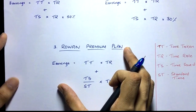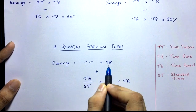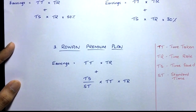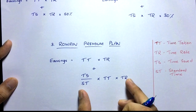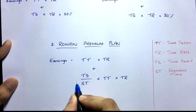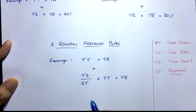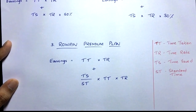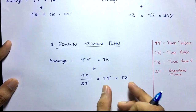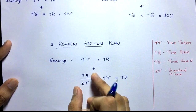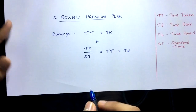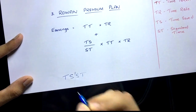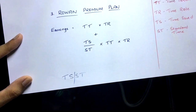In the Rowan Premium Plan, the basic part is the same — Time Taken × Time Rate — but the bonus part is: (Time Saved ÷ Standard Time) × Time Taken × Time Rate. To remember this, use the mnemonic TSST: Time Saved over Standard Time, then multiply by Time Taken × Time Rate. Always remember TSST so you don't mix up which term goes in the numerator versus denominator.